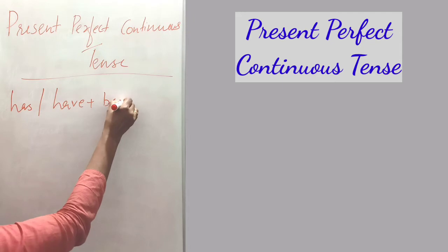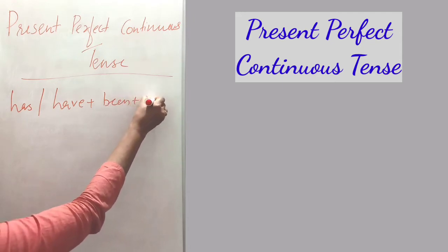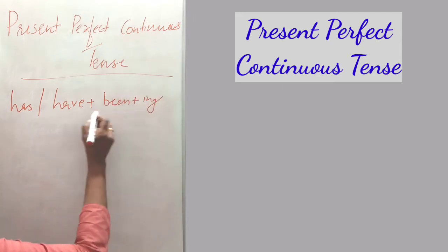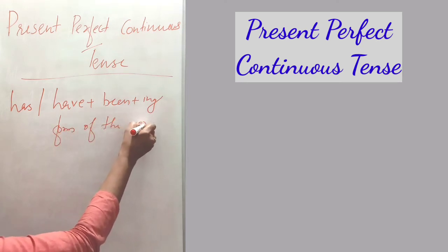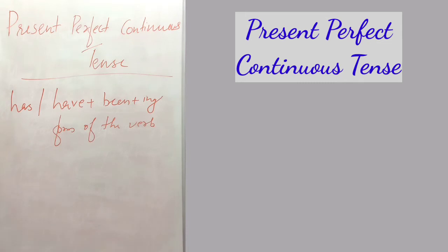The formula is: has or have, plus been, plus the ing form of the verb. If the subject is singular, we use has been plus the ing form of the verb. If the subject is plural, we use have been plus the ing form of the verb. For the subjects I and you, we also use have been plus the ing form of the verb.